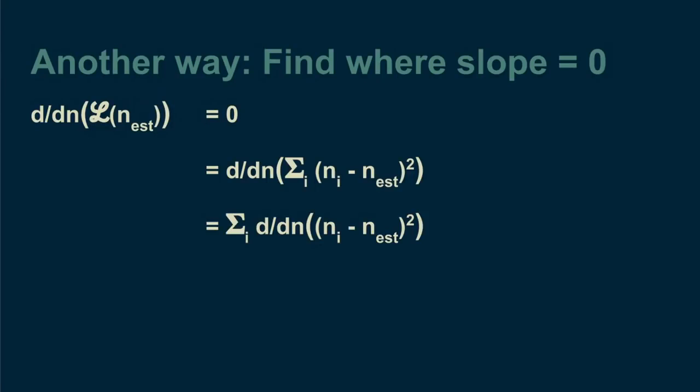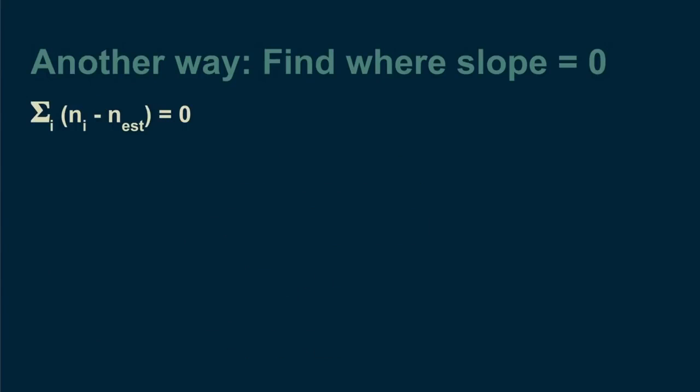We take advantage of the fact that the derivative of a sum is the sum of the derivatives of all its parts. Then we can take the derivative of each part. The exponent two comes down in front. Because the whole expression is already equal to zero, we can divide both sides by two. Then what's left is still equal to zero. And we can break out the sum into its pieces. We have a total of m bags of M&Ms. If we add up n estimated m times, we end up with m times n estimated multiplied. Then we can subtract this term from both sides and move it to the other side of the equal sign. And finally, we can divide by m.